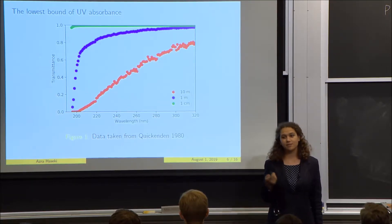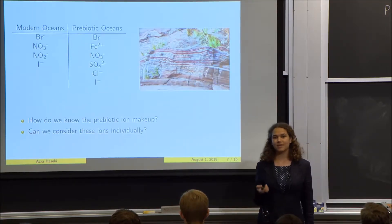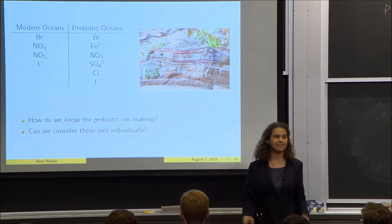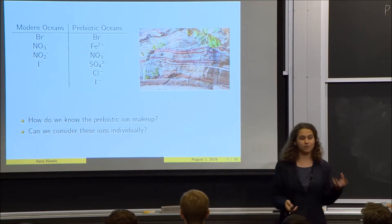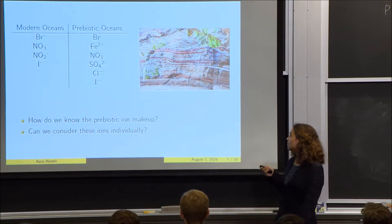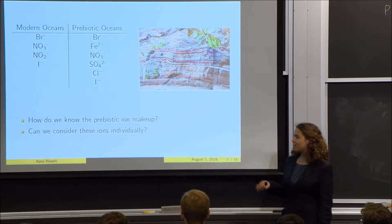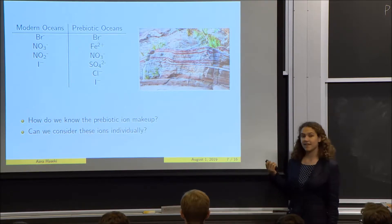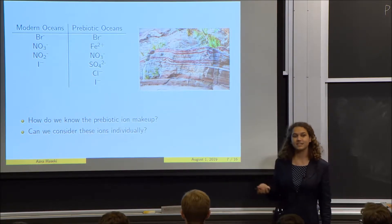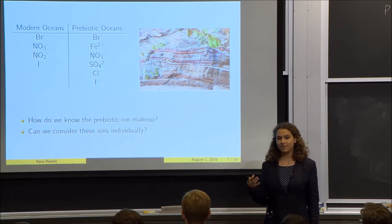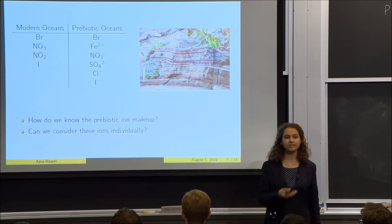We then moved on to modeling the modern abiotic ocean — the modern ocean without organics — and the prebiotic ocean. We have data for the ions present in each, and they're quite different in some cases, mainly because the sources and sinks for certain ions are dependent on life itself.